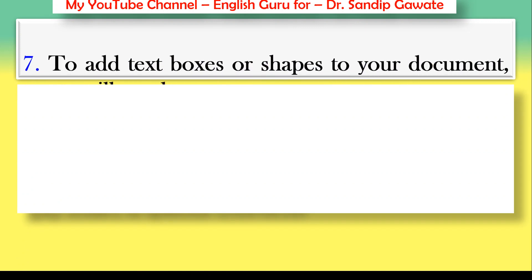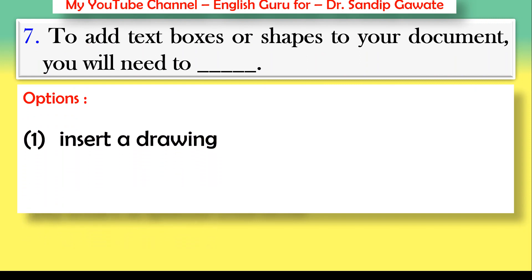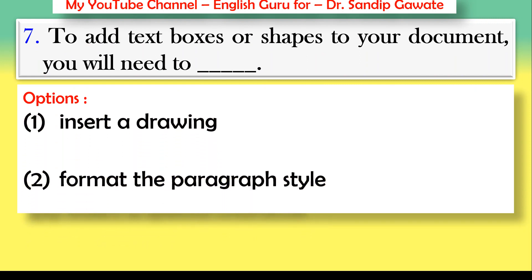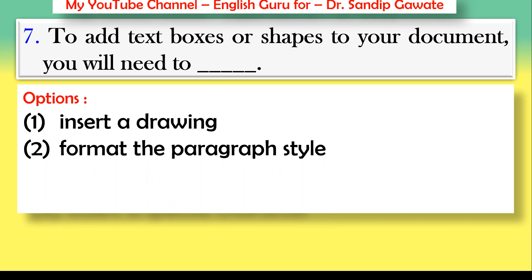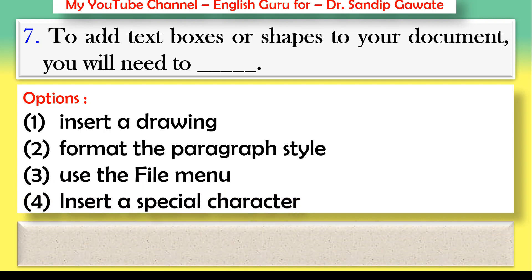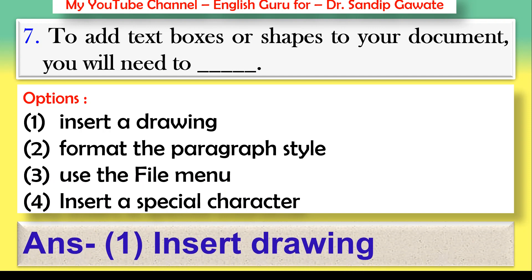Question 7: To add text boxes or shapes to your document, you will need to — insert a drawing, format the paragraph style, use the file menu, or insert a special character? The correct answer is option number one — insert a drawing.